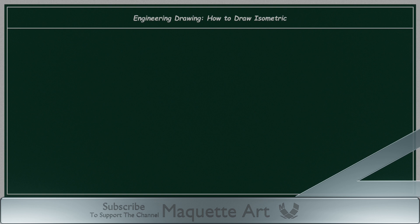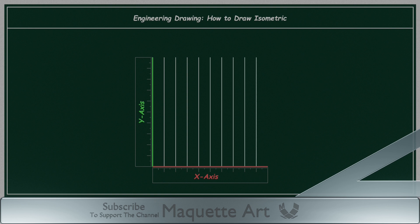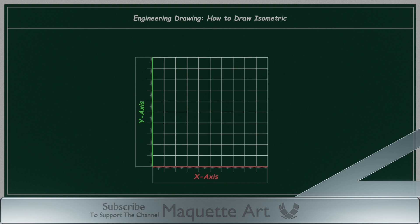First, let's draw a 2D grid with x-axis and y-axis. The x-axis is parallel to the horizontal, while the y-axis is parallel to the vertical. This 2D grid is made of squares of 1 by 1 cm.